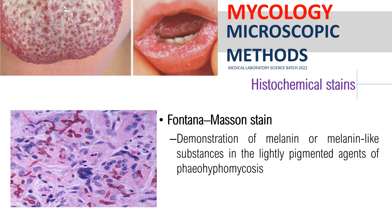Last for your histochemical stains is Fontana Masson stain. This stain is used for the demonstration of melanin or melanin-like substances in the lightly pigmented agents of phaeohyphomycosis. This is the best example of this type of fungal agent. In the laboratory, the majority of histochemical work is part of your histopathology section.